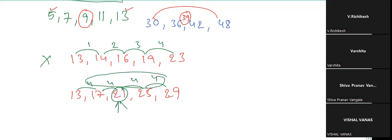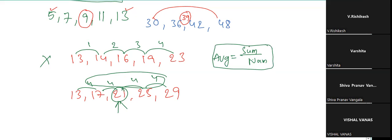For the above numbers where the gap is unequal, we use: average equals sum of numbers divided by number of numbers. Sum of numbers divided by number of numbers. We'll see this later. So till now we have completed one concept — mean or middle.